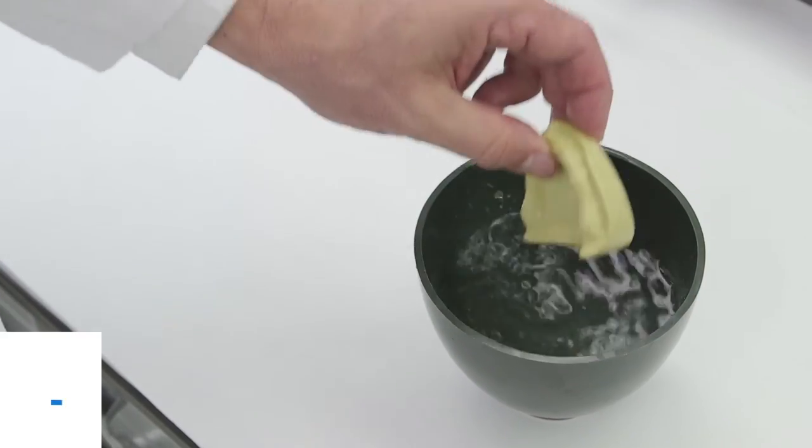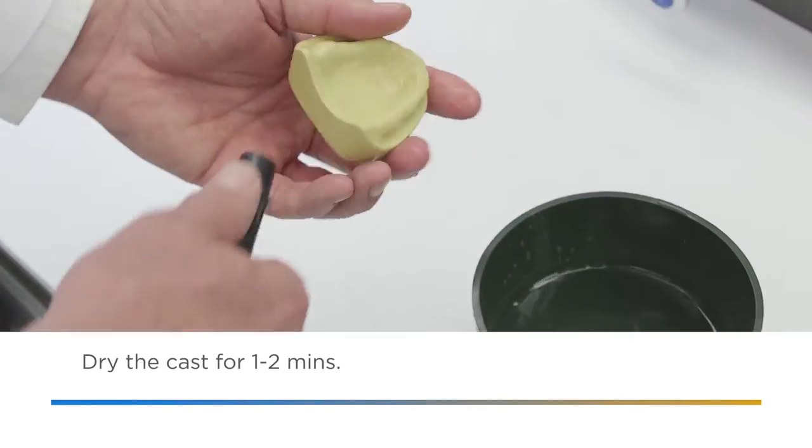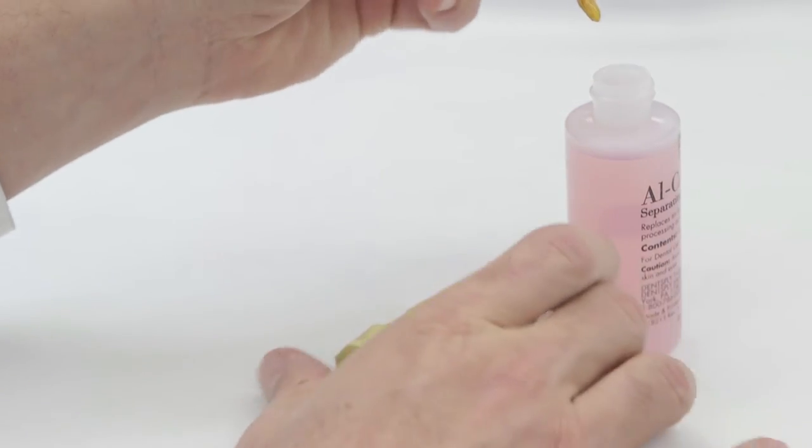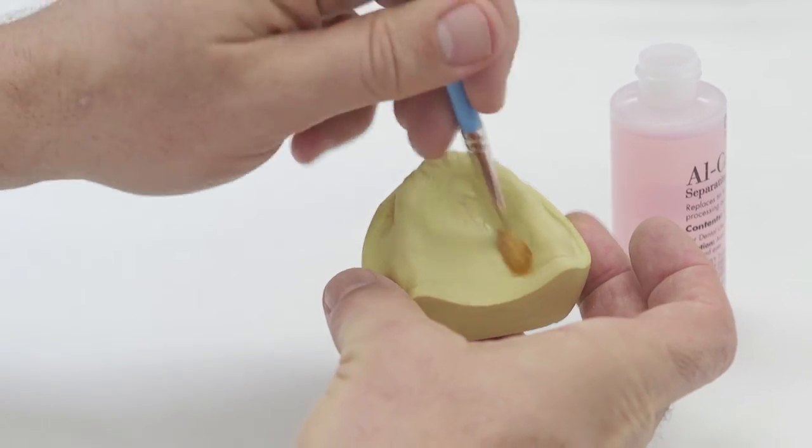Remove the cast from the water and allow it to dry for one to two minutes. Next, proceed to the second part of this step, applying the separator.